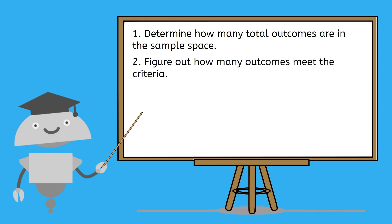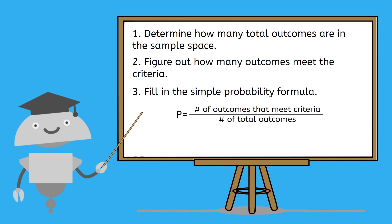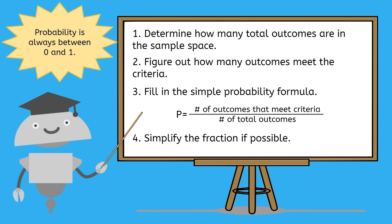To calculate the simple probability of an event, first determine how many total outcomes are in the sample space. Then, figure out how many of those outcomes meet the criteria that you're being asked about. Use those numbers to fill in the simple probability formula. And lastly, simplify the fraction if at all possible. As you work through your practice game, remember, probability will always be between zero and one. This is a great way to check that your answers are plausible. Good luck on that, and I'll see you next time!